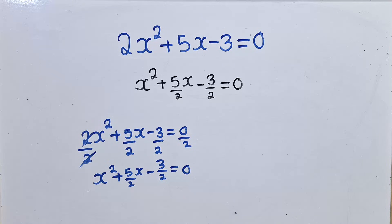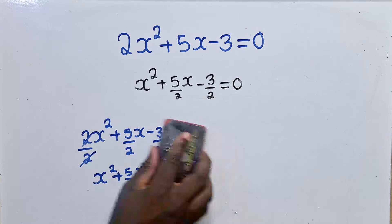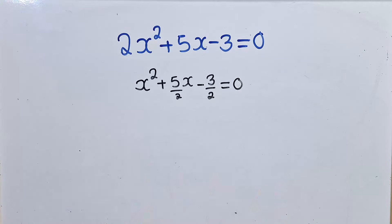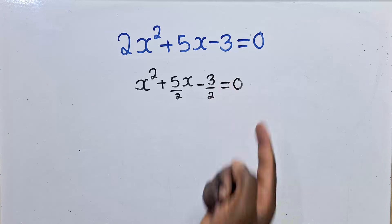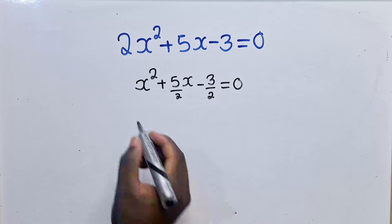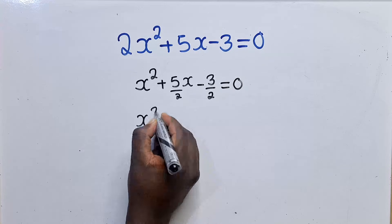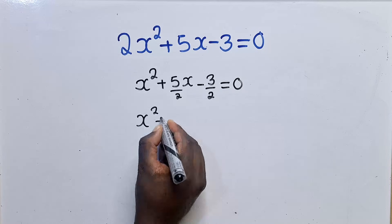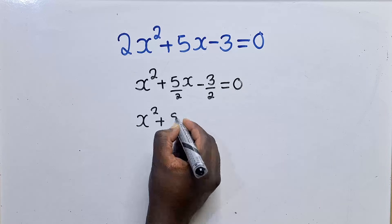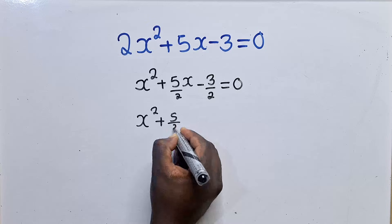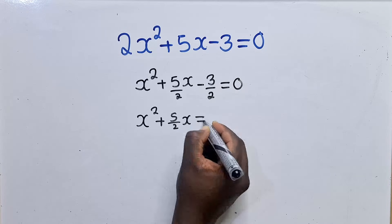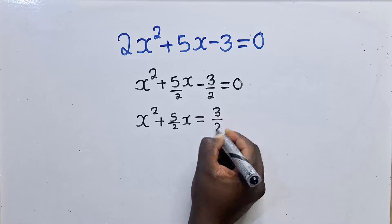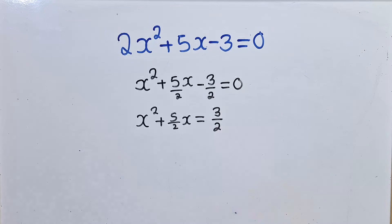Once we do that, we can now move this constant to the other side of the equation. So it will be x² + (5/2)x = 3/2.